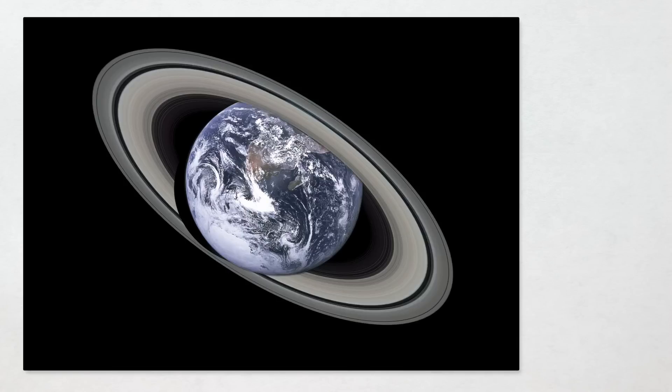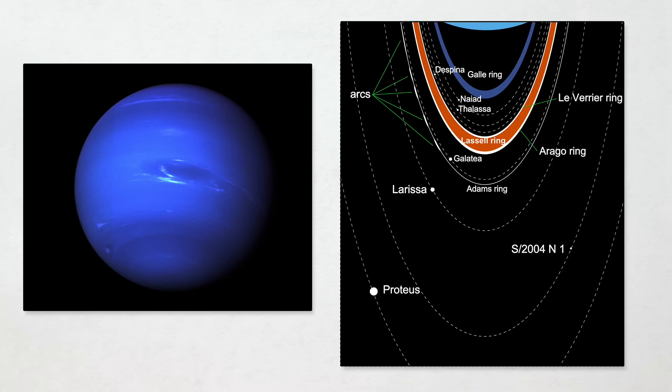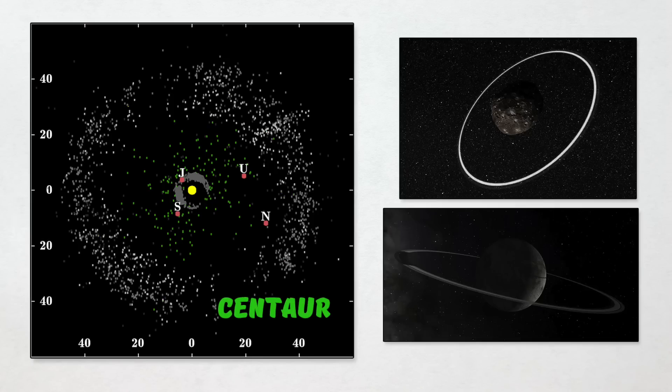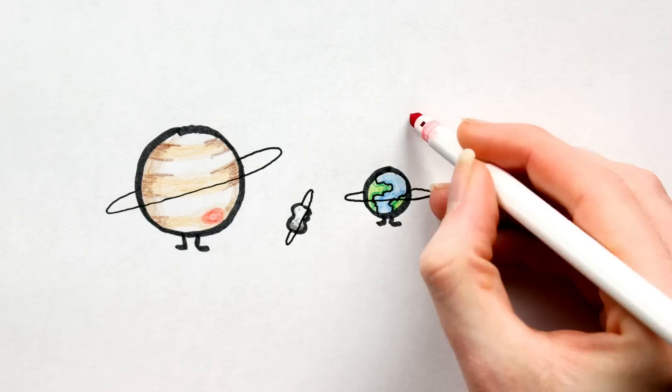Hold on, Earth? Rings? Is that even possible? Well, Saturn has rings, Jupiter has rings, Uranus has rings, Neptune has rings, hell we've even found two centaurs with rings, Cariclo and Chiron. So if big things can have rings and little things can have rings, why not intermediate things too?